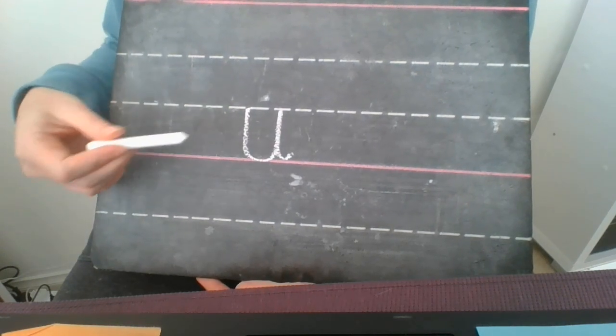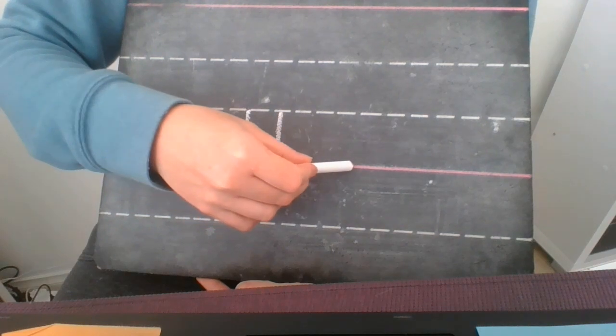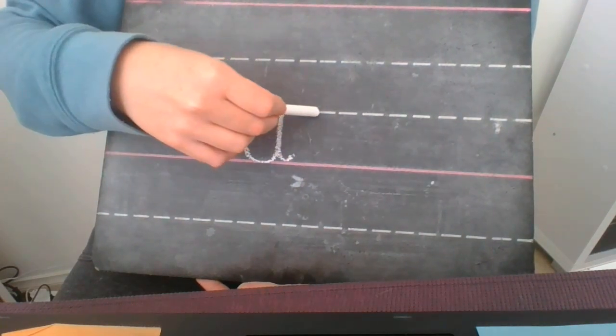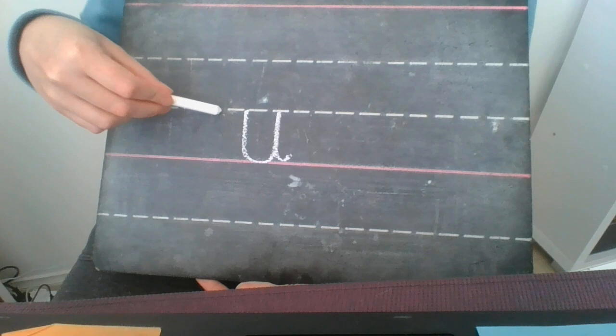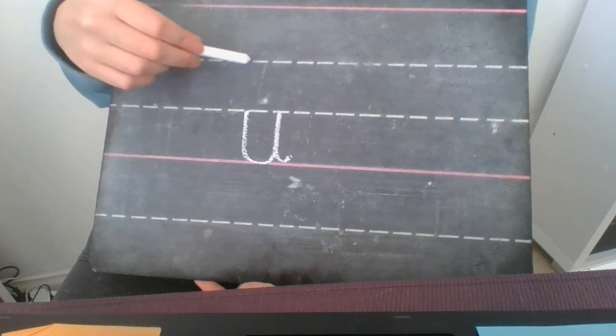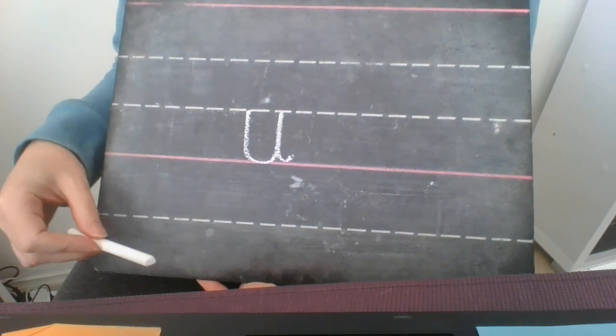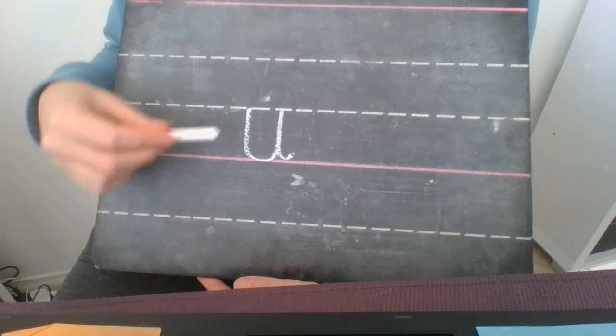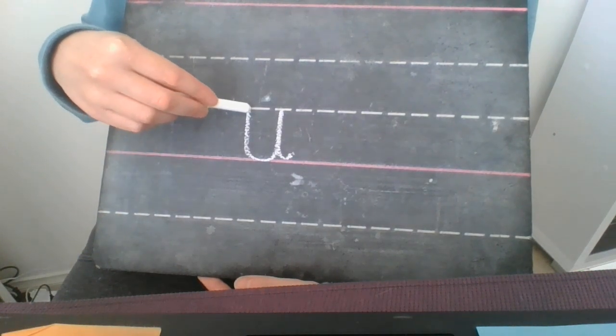And when we have a look at our letter u, it is going to be sitting on the ground. It's going to be touching the grass and it's not going to be touching any of the other lines. It's not going up to the sky or to the underground line.